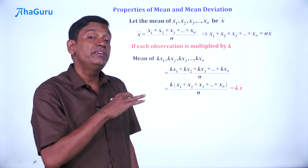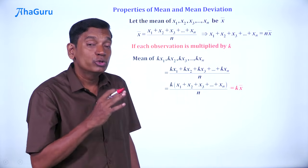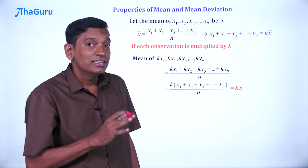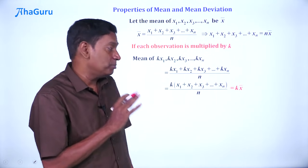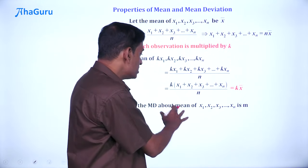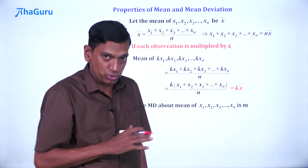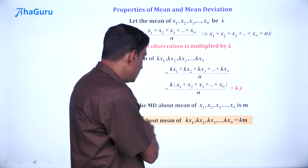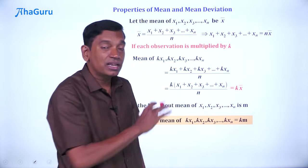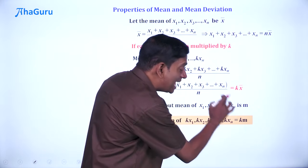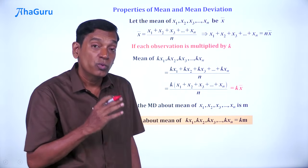What about mean deviation? If you thought like earlier that mean deviation won't change, then you're in for a surprise. The mean deviation about the mean of the original observations is m. But the mean deviation of kx₁, kx₂, etcetera is actually km, not the same m. Why?